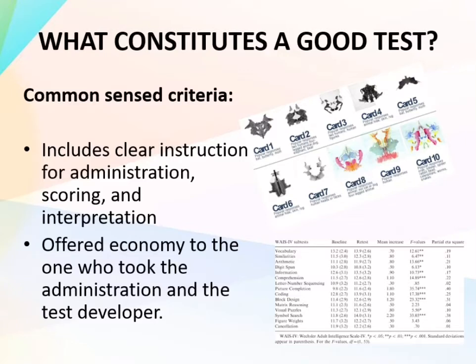Interpretation is the way that scores are given meaning, and clear instructions must be provided. A good test also offers economy to the administrator and to the test developer. Good tests undergo a series of processes before being established, and that process is not easy and is costly. That's why good tests like the Rorschach inkblot test and the Wechsler Adult Intelligence Scale are sold at a high cost — they can serve as bread and butter to the test developer and even to the one who administers it.